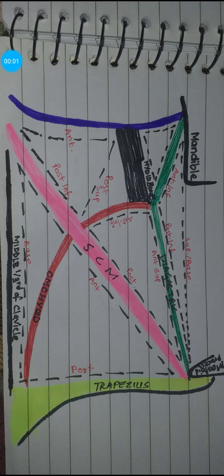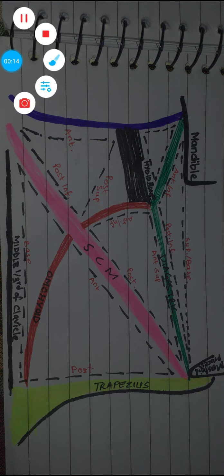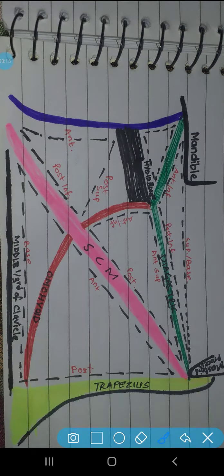Let's start with the anterior triangle. In the previous video we saw the boundaries and the contents for the posterior triangle. Now we will see the anterior triangle boundaries and contents. First we will see the anterior triangle boundaries.